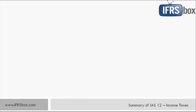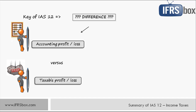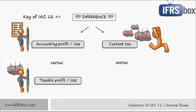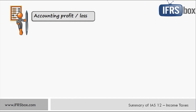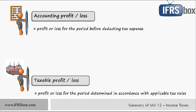A key element of understanding IAS 12 is to understand the difference between accounting profit or loss and taxable profit or loss on one side, and the difference between current income tax and deferred income tax on the other side. Accounting profit is defined as a profit or loss for the period before deducting tax expense — it is the profit before tax. Taxable profit or loss is the profit or loss for the period determined in accordance with the rules established by the taxation authorities upon which income taxes are payable or recoverable.